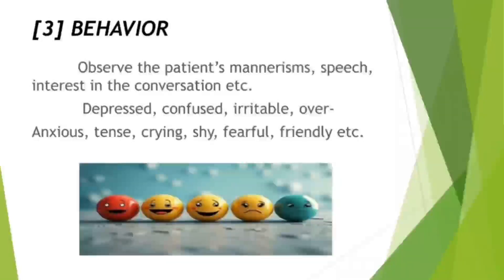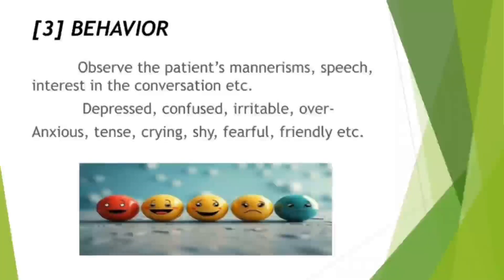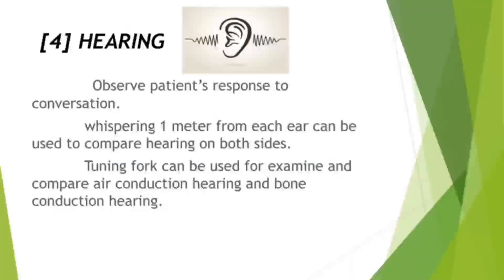Behavior: observe the patient's mannerisms, speech, and interest in the conversation. Behavioral observations may include: depression, confused, irritable, over-anxious, tense, crying, shy, fearful, friendly, etc. Hearing: observe the patient's response to the conversation. Whispering one meter from each ear can be used to compare hearing on both sides. A tuning fork can be used to examine and compare air conduction hearing and bone conduction hearing.